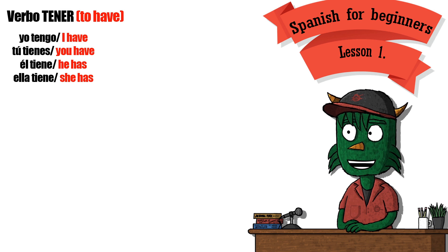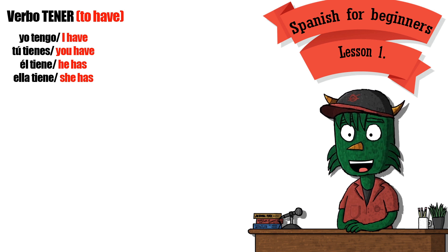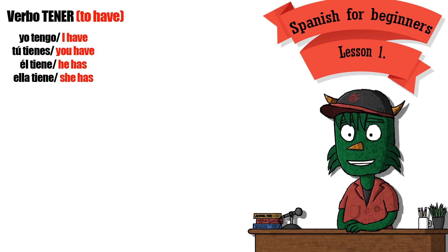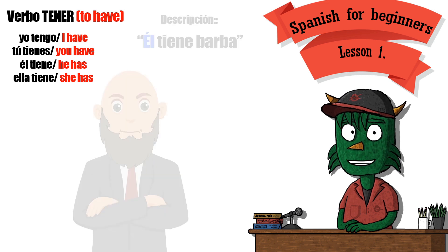Let's go now with the verb tener — it's like to have in English. Yo tengo — I have. Tú tienes — You have. Él tiene — He has. Ella tiene — She has.